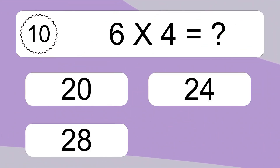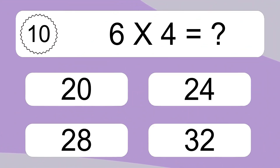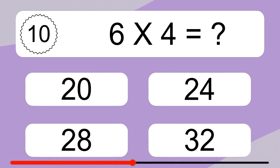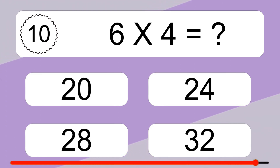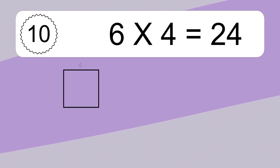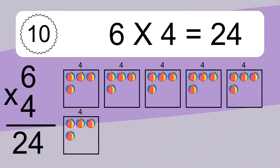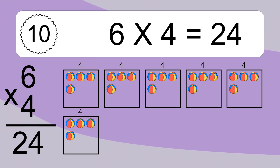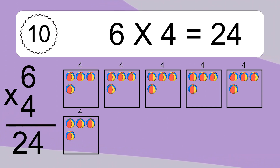6 times 4 equals what? We have 6 boxes, and each box has 4 colorful balls inside. If you count all the balls in all the boxes together, you will have 6 times 4 balls. This equals 24 balls.